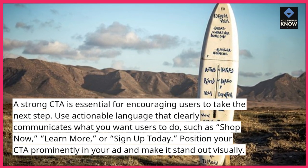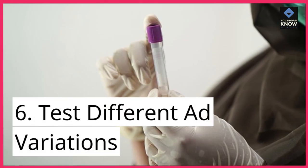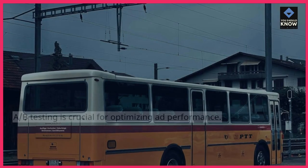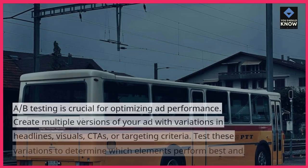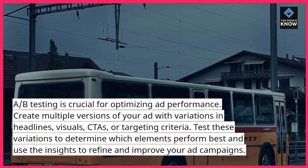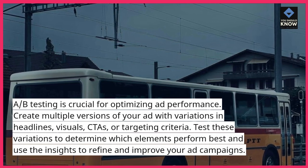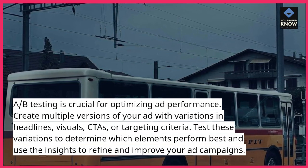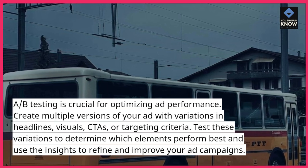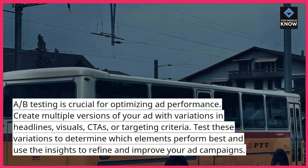Position your CTA prominently in your ad and make it stand out visually. 6. Test Different Ad Variations. A/B Testing is crucial for optimizing ad performance. Create multiple versions of your ad with variations in headlines, visuals, CTAs, or targeting criteria. Test these variations to determine which elements perform best and use the insights to refine and improve your ad campaigns.